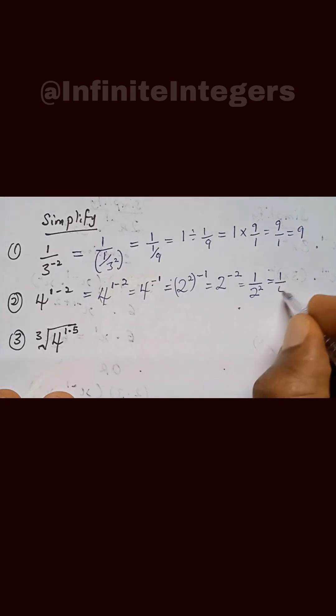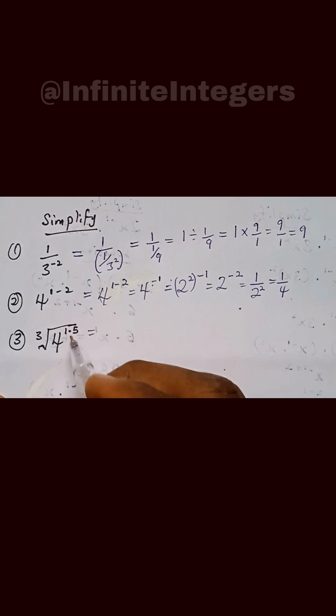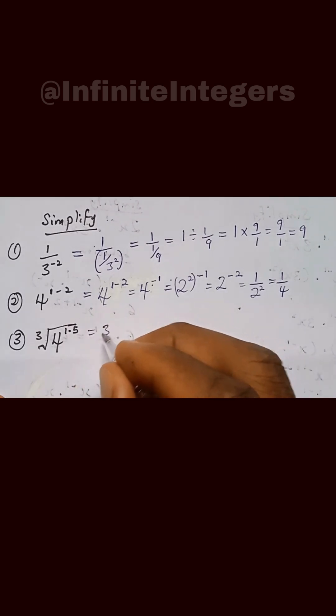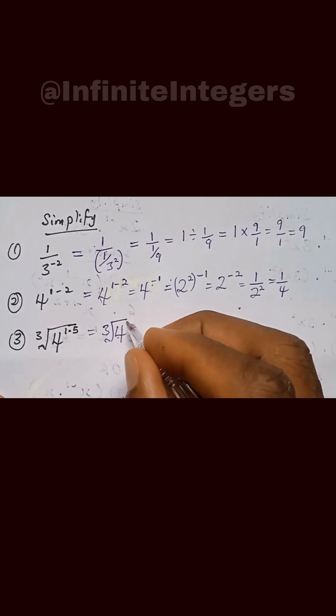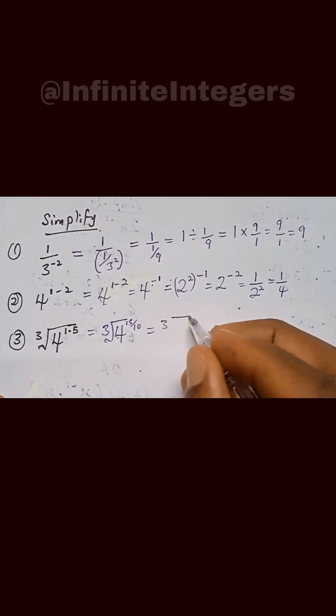For the last one, we express the decimal power, the exponent, as a fraction. We have cube root of 4 to the 1.5. 1.5 equals 15 over 10. We simplify the power: 5 goes into 10 twice, 5 goes into 15 three times, so we have 3 over 2.